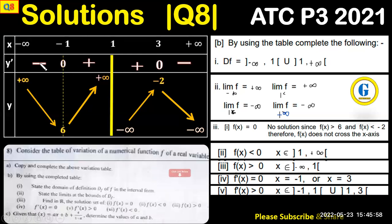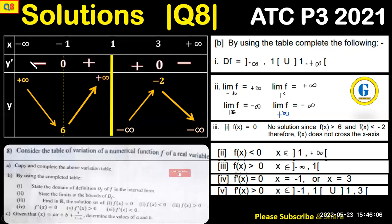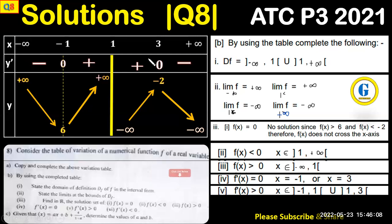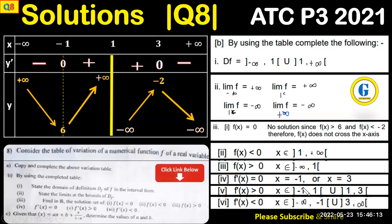For f'(x) < 0: we are looking for where f prime is negative — this occurs from negative infinity to negative 1, and from 3 from above to positive infinity.